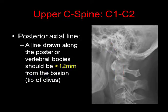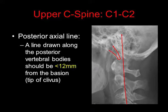Also look at the posterior axial line. This is a line drawn along the posterior vertebral bodies, and this should be less than 12 mm from the tip of the basion, shown here as the yellow line, which should be less than 12 mm.